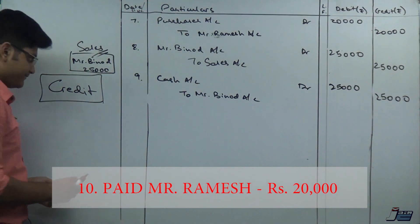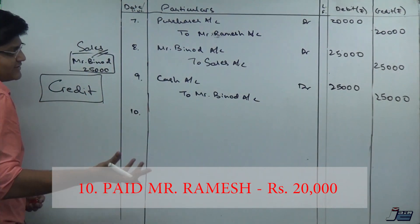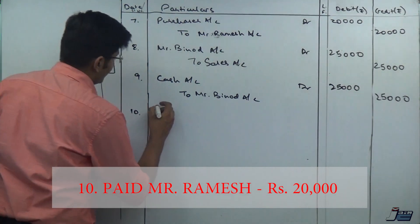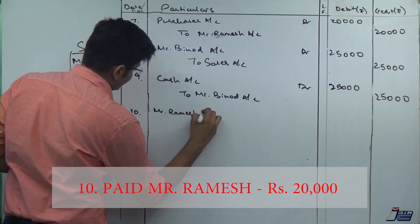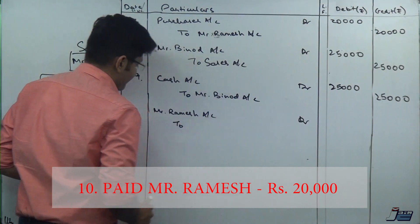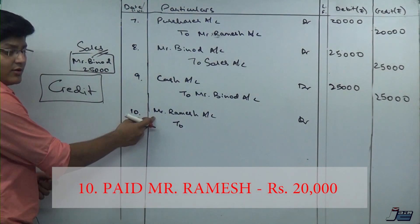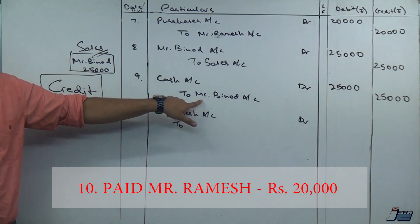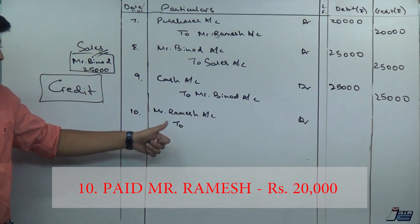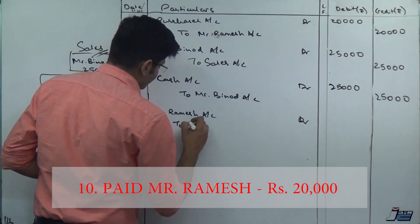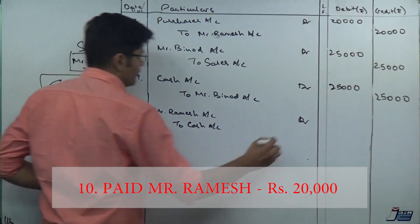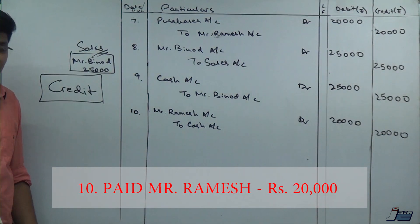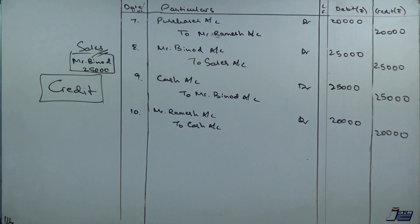Entry number ten: paid Mr. Ramesh, rupees 20,000. We had purchased goods from Mr. Ramesh on credit, so now we pay him back. Mr. Ramesh is the receiver — debit the receiver per the golden rule — and cash is going out. In transaction nine, Mr. Binot gave us money so he was credited; here Mr. Ramesh is receiving so his account is debited. So: Mr. Ramesh Account debit to Cash Account, amount 20,000.